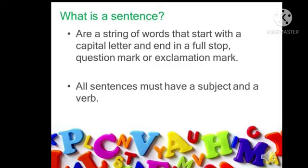What is a sentence? Sentences are a string of words that start with a capital letter and end with a full stop, question mark, or exclamation mark. A sentence is a group of meaningful words that starts with a capital letter and ends with a full stop, question mark, or exclamation mark. And there is one rule: a sentence should have a subject and a verb.